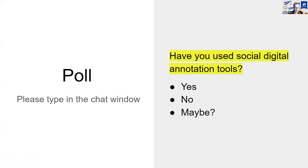Have you used social digital annotation tools? Lisa says she teaches annotation on the ground and would like her virtual students to annotate too. Hypothesis is a great way for students to connect in cyberspace. Social annotation is where people can see what other people are commenting on, and it's usually purposeful. Another example is genius.com, where people annotate song lyrics or poetry — that's been popular too.